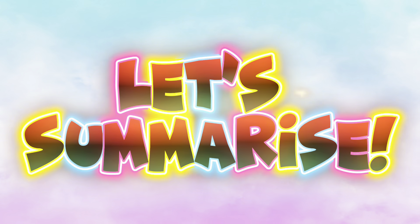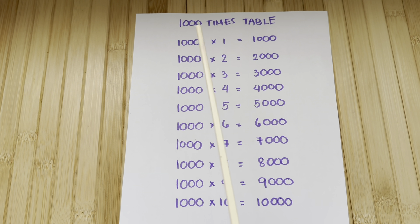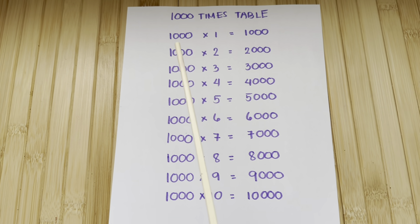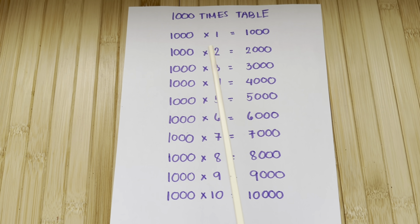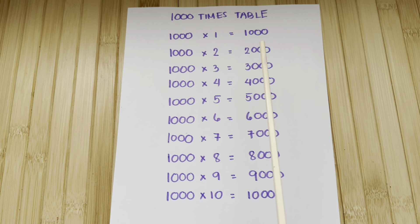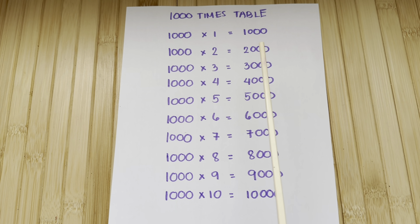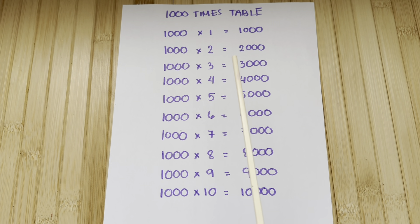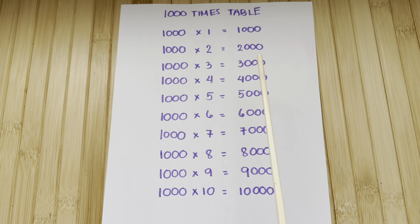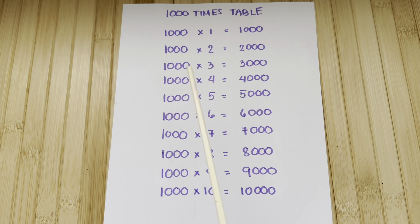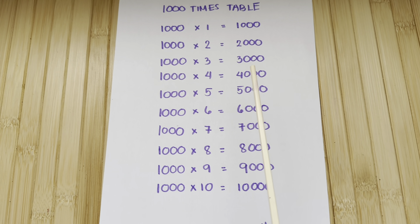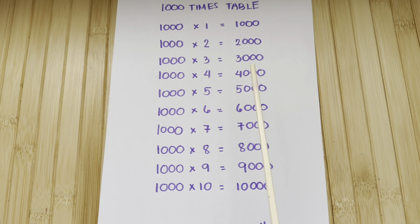Now, let's summarize. Let's learn the 1,000 times table. 1,000 times 1 is equals to 1,000. 1,000 times 2 is equals to 2,000. 1,000 times 3 is equals to 3,000.